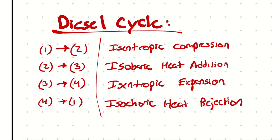So the diesel cycle is isentropic compression from one to two, isobaric heat addition from two to three, isentropic expansion from three to four, and isochoric heat rejection from four to one.